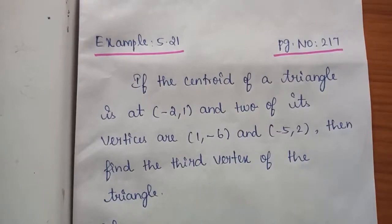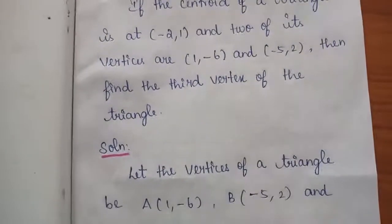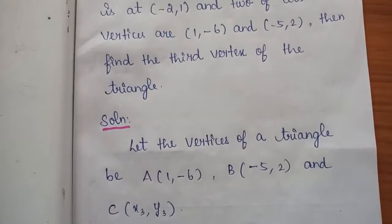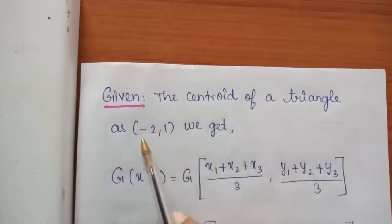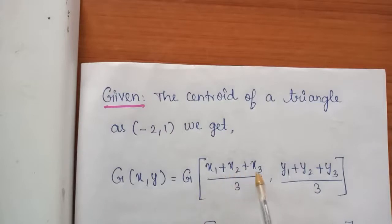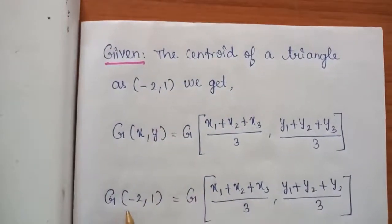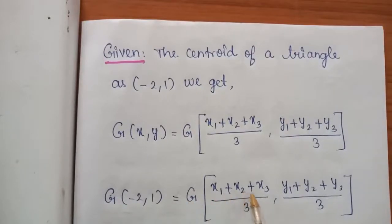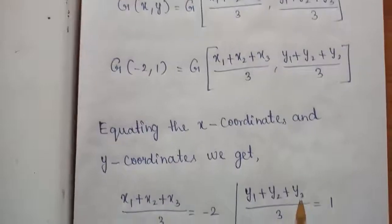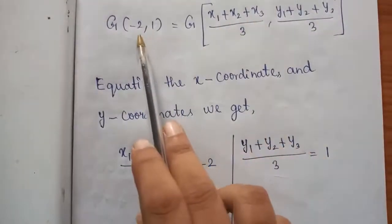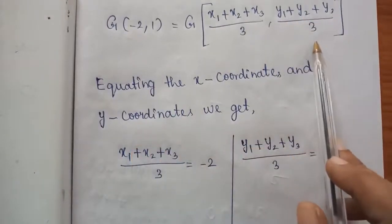Solution: Let the vertices of the triangle be A(1,-6), B(-5,2) and C(X3,Y3), since we do not know the third vertex. The centroid is given as (-2,1). Using the centroid formula, G(-2,1) = ( (X1+X2+X3)/3 , (Y1+Y2+Y3)/3 ). Equating X and Y coordinates: (X1+X2+X3)/3 = -2 and (Y1+Y2+Y3)/3 = 1.